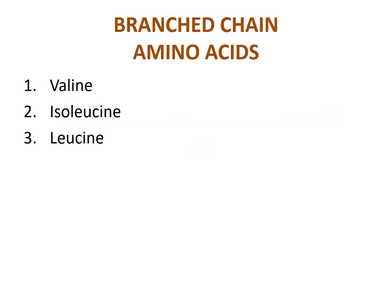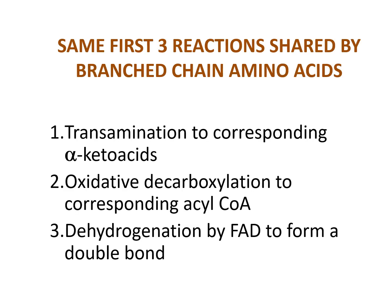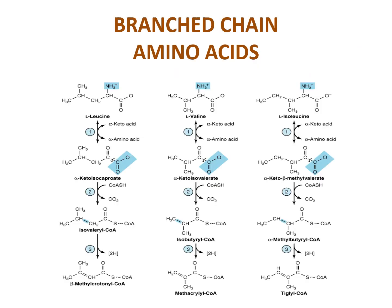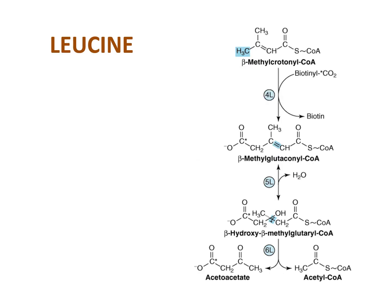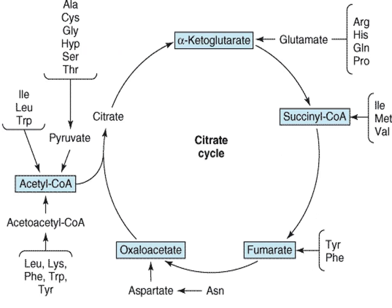Branched-chain amino acid catabolism involves valine, isoleucine, and leucine. These three share the same first two reactions employing common enzymes, while subsequent products are catabolized by distinct pathways. The first three shared reactions are: transamination to corresponding alpha-keto acids, oxidative decarboxylation to corresponding acyl-CoA, and dehydrogenation by FAD to form a double bond. The fate of these amino acids ultimately produces substrates for the citric acid cycle.